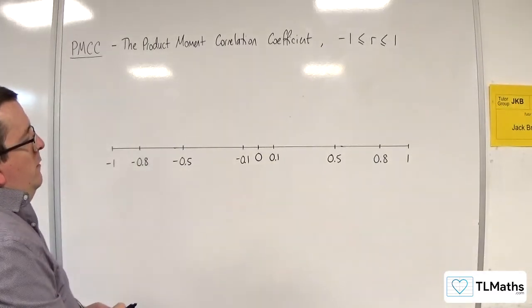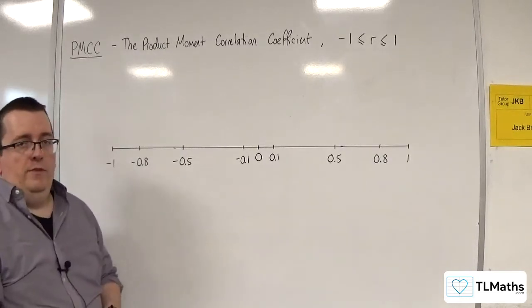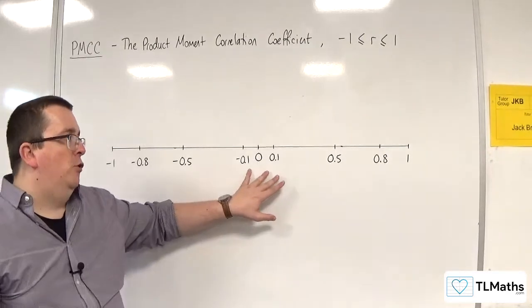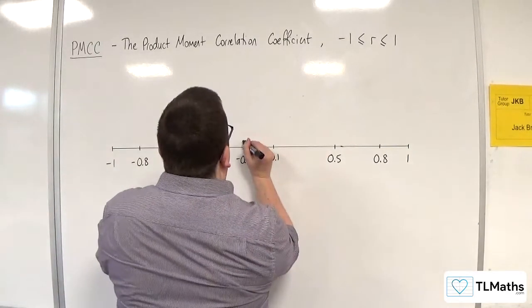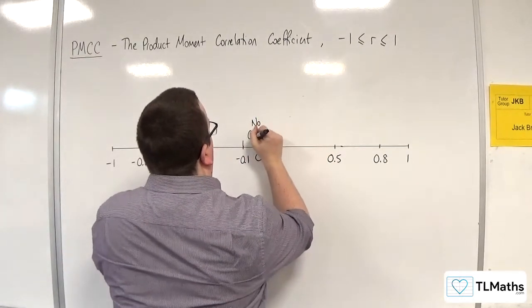So when we talk about no correlation, we are really looking at values traditionally between minus 0.1 and 0.1. Between these two values, we would refer to that as no correlation.